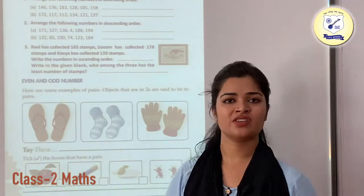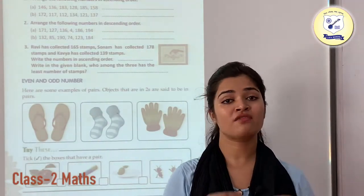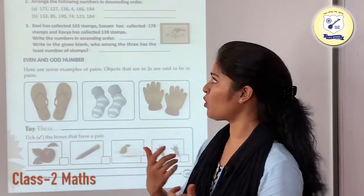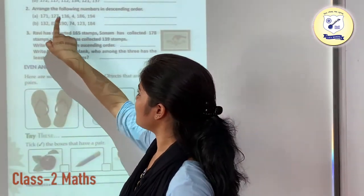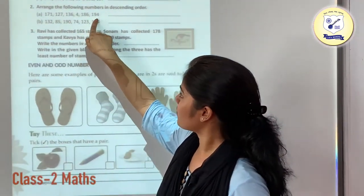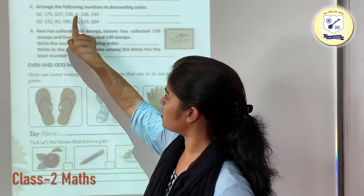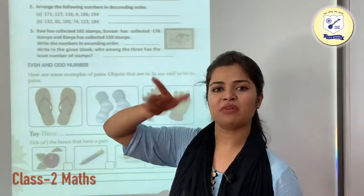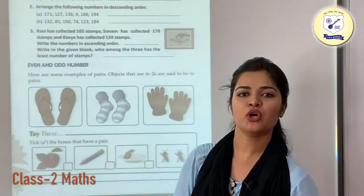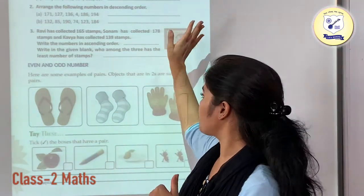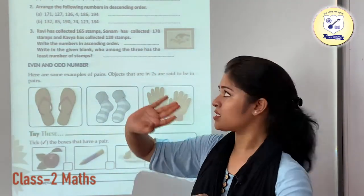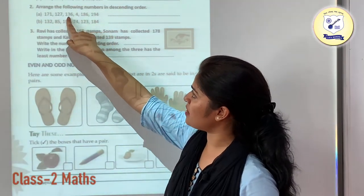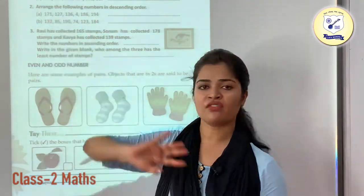After that, we are going to arrange the numbers in descending order. Here we are having 3-digit, 3-digit, 1-digit, 3-digit, 3-digit, 3-digit numbers. So this 1-digit number is definitely going to be your smallest one. We are just going to put that in the last. After that, you can see that the hundreds place value is the same for everybody.